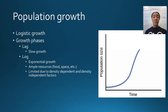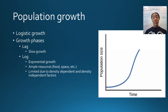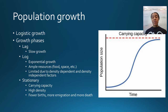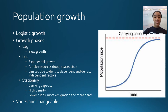The lag phase is followed by the log phase, where we see exponential growth — the density of the population increases exponentially over time. This occurs when conditions are optimum: plenty of water, nutrients, resources, and space. Organisms will keep growing exponentially until they start to reach their carrying capacity, which is the maximum density of that population that can be supported in that environment. It varies per organism and per environment. Once we start getting close to the carrying capacity, growth starts to level off.